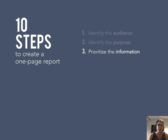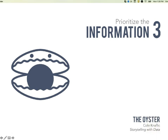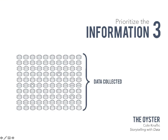The third step is prioritizing the information. For this, I'm going to hop over to an example by Cole Knopfloch and her book Storytelling with Data. In Cole's book she describes a story about a researcher who collected a lot of data. So here's all of our data — but there were three meaningful pieces of data in there, and as you can see there are a lot of oysters to look for.